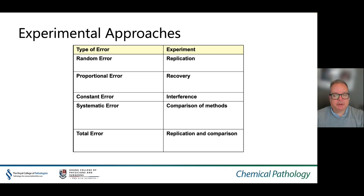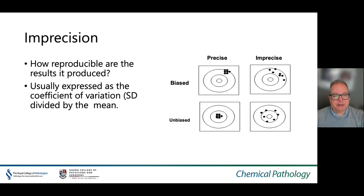In general, when performing experiments, the type of error to be determined can be broadly mapped to specific experiments — for example, random error can be determined by replication, proportional error by recovery, and so on. The results of those experiments are then compared to your specification standard. Imprecision describes how reproducible the results are and is usually expressed as the coefficient of variation (CV), which is standard deviation divided by the mean. Standard illustrations of precise and imprecise, biased and unbiased assays are detailed on the associated slide.